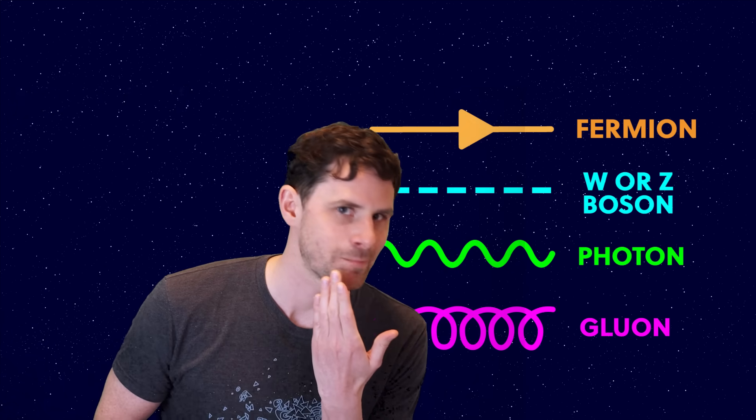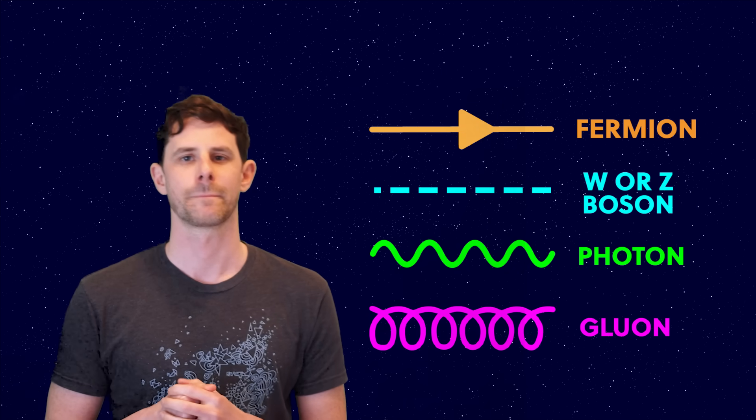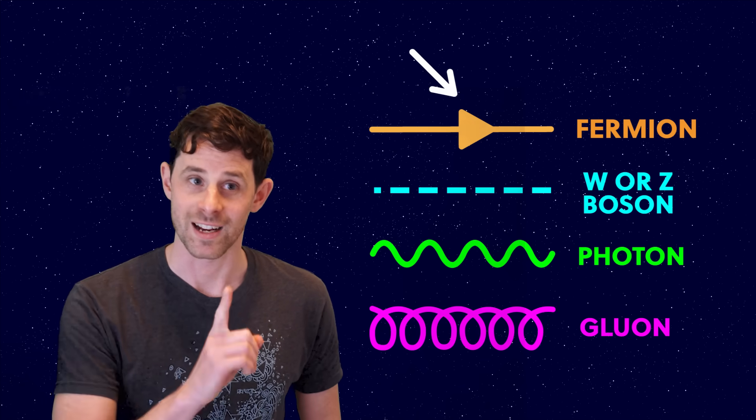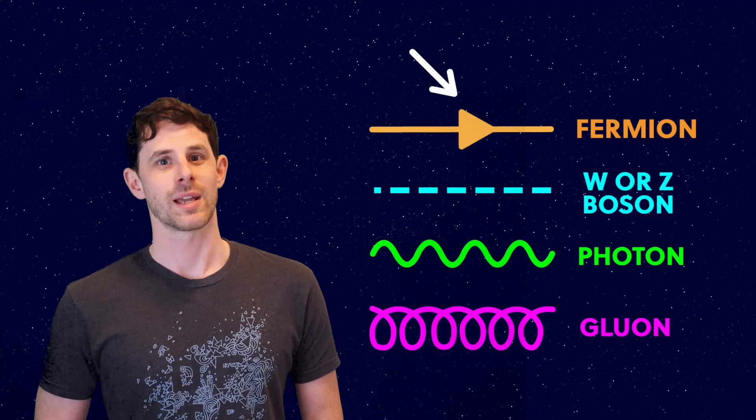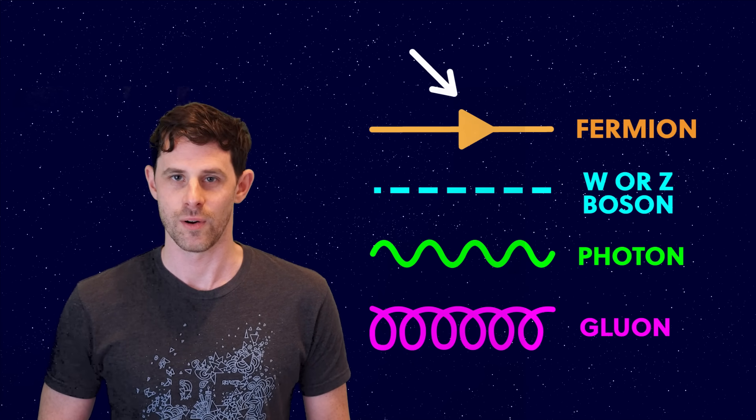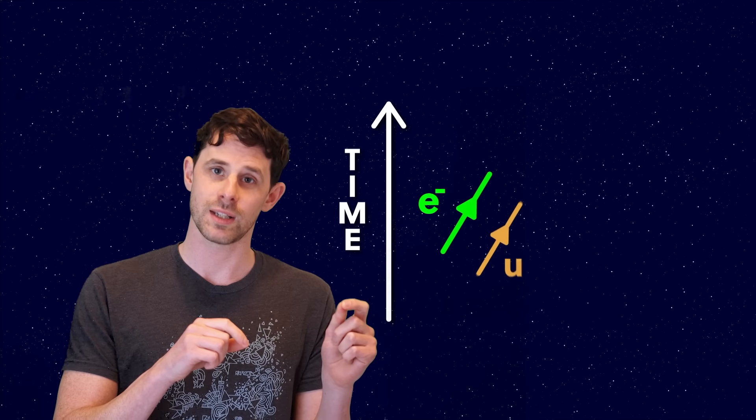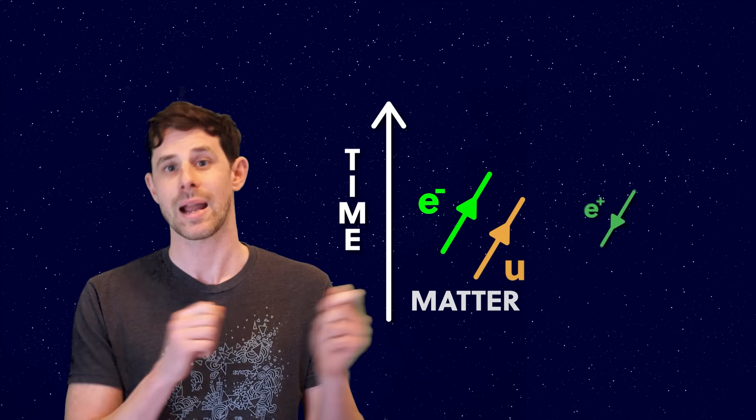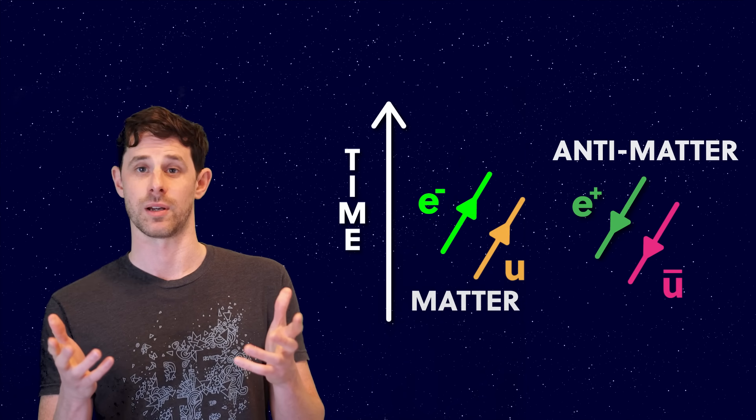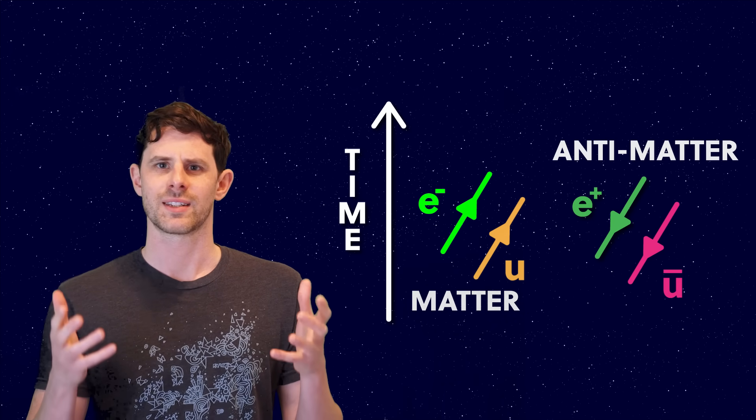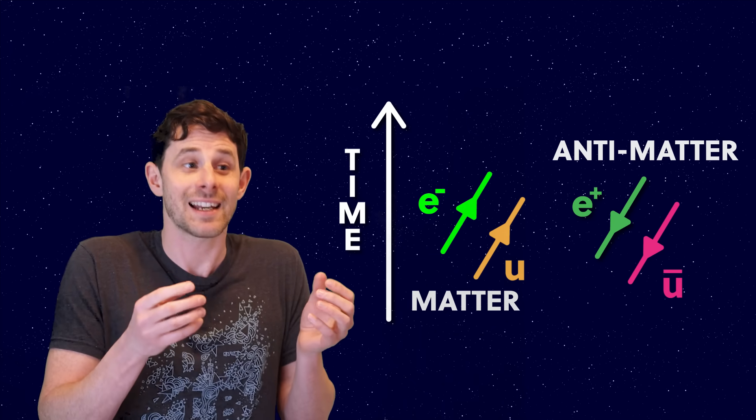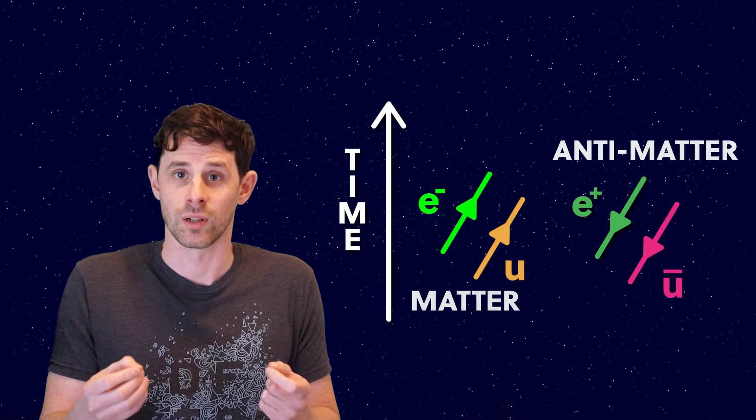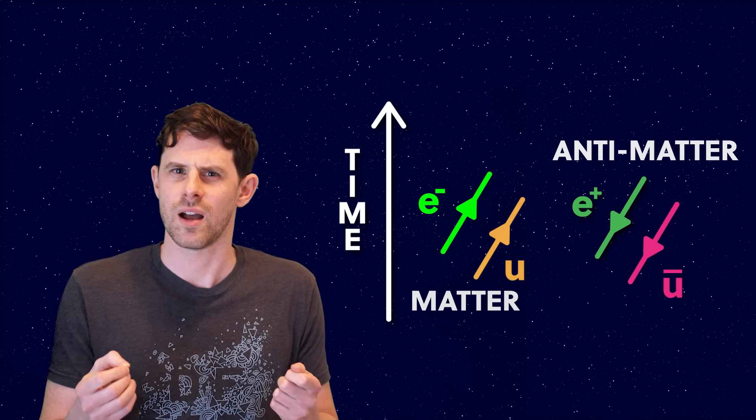You're supposed to ask about the arrows. But what about the arrows? Thanks for asking. These only appear on the solid lines of the fermions, and they point forwards in time for matter particles, and backwards in time for antimatter particles. Because weirdly, in particle physics, an antimatter particle is exactly the same as a matter particle. It's just travelling backwards in time.